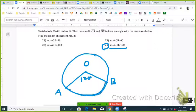That means this arc is 120 degrees, one third of the whole circle. So find the length of segment AB.